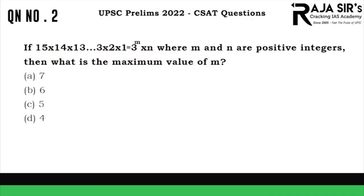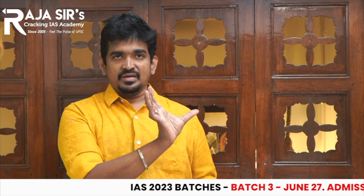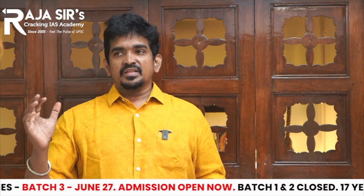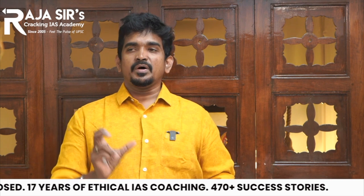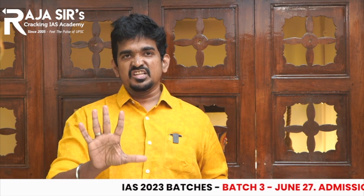3 power M into N, where M and N are positive integers. Then what is the maximum value of M? Options: A-7, B-6, C-5, D-4. This is very simple. Actually 1, 2, 3, 4 up to 15 - that is the left hand side. That is 3 power into A number. Now 3 power in the left hand side, 3 multiples. So 3, you have three, six, nine, twelve, fifteen. Why fifteen? This 5th number is 3.